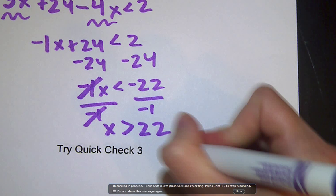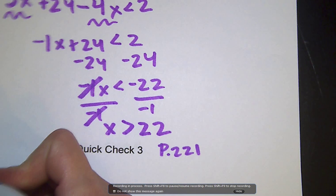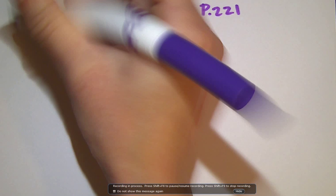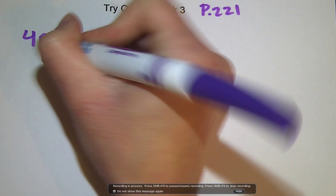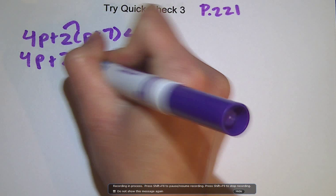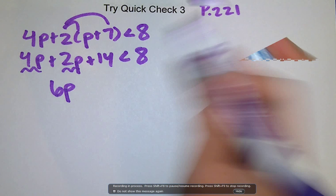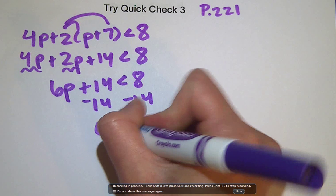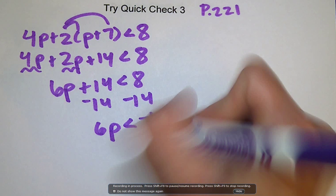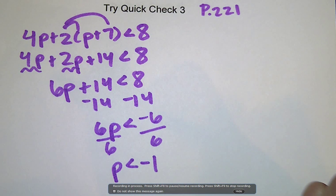Try QuickCheck 3, at the top of page 221. Hit pause and play when you're ready. The first one is 4p plus 2 times the quantity p plus 7 is less than 8. Distribute: 2 times p is 2p, 2 times 7 is 14. Combine like terms: 4p plus 2p is 6p, giving 6p plus 14 is less than 8. Subtract 14, getting 6p is less than negative 6. Divide by 6 — that's a negative 6 result but I didn't divide by a negative — so the sign stays: p is less than negative 1.